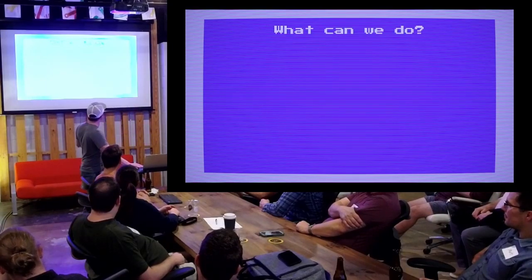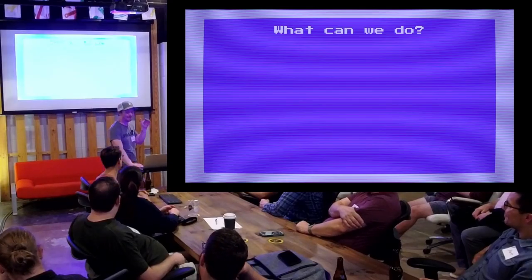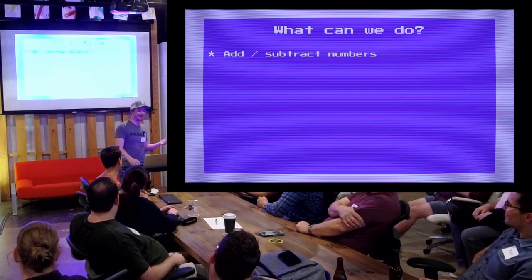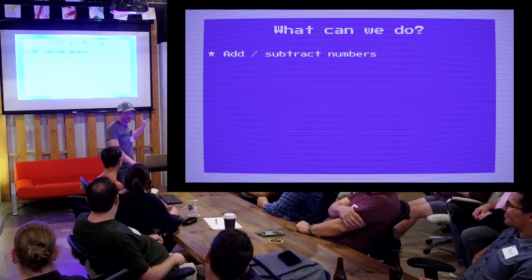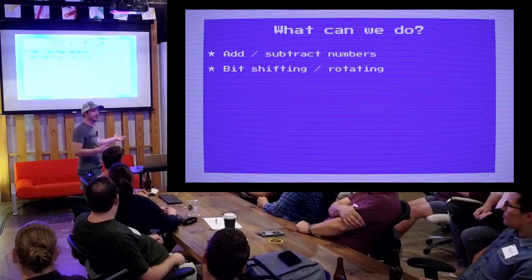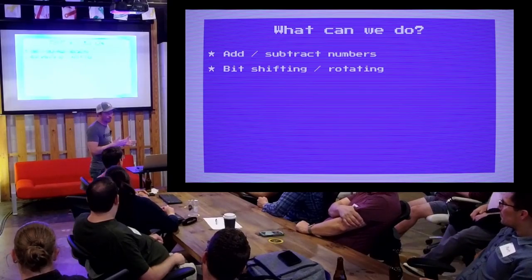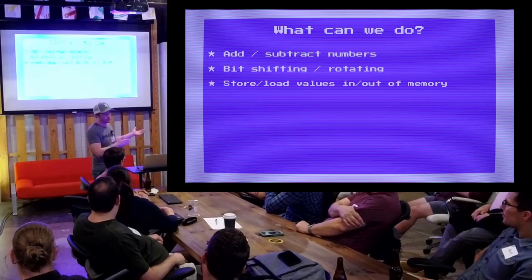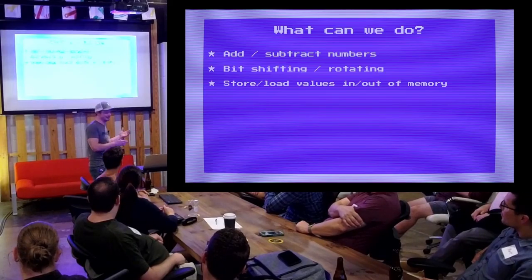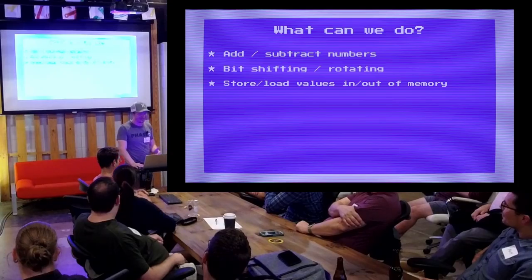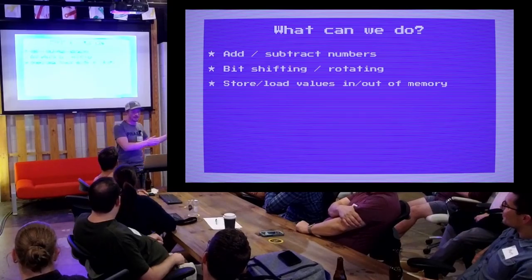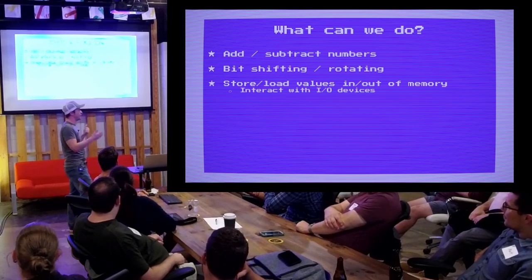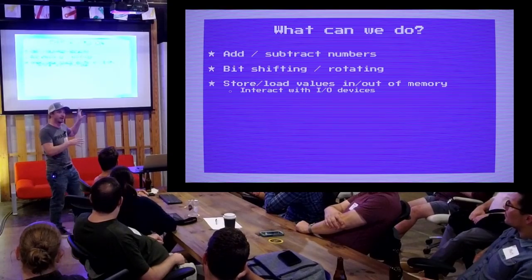So what can we do with assembly language? Not that much line by line. You can add and subtract numbers. Some assembly languages allow you to multiply and divide numbers, which is pretty fancy, but not in the Commodore 64 — not exactly anyway. You have bit shifting and rotating, which would be involved if you want to do fast multiplication or division. You can store and load values in and out of memory, typically byte by byte — exact instructions. You're saying: store this byte into this place in memory, load a byte from this place in memory. In the Commodore 64 and many other architectures, that's also how you interact with I/O devices.